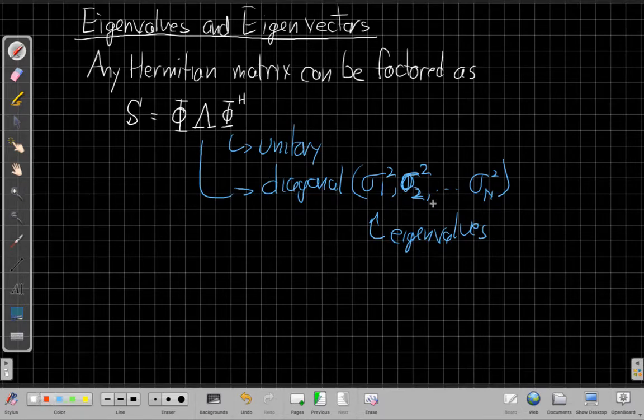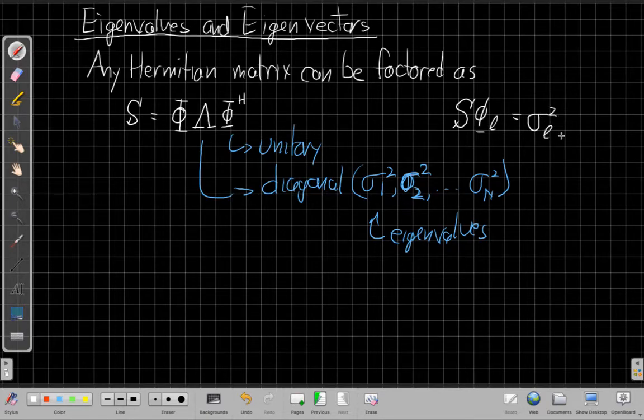They're the solution to an equation. We could say if phi is an eigenvector of this, what it's saying is that if I take S and multiply it by the vector phi_L, it's the same thing as getting back sigma_L squared times the same matrix. So it's this idea that I multiply phi by the matrix, I still get the same vector, just scaled by a constant, which in our case for a Hermitian matrix like this that's a covariance matrix, the eigenvalues are always going to be the powers on these different dimensions.